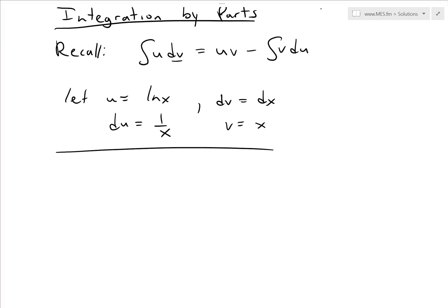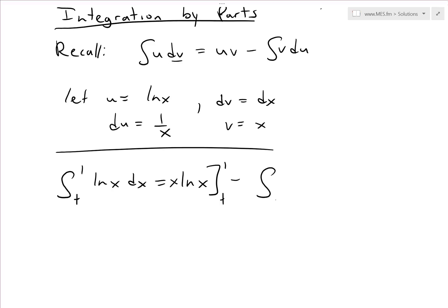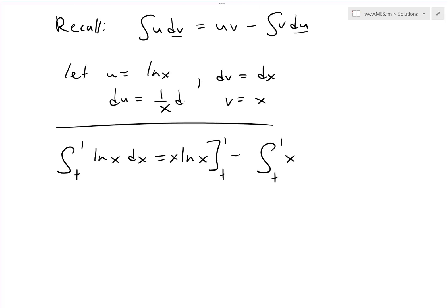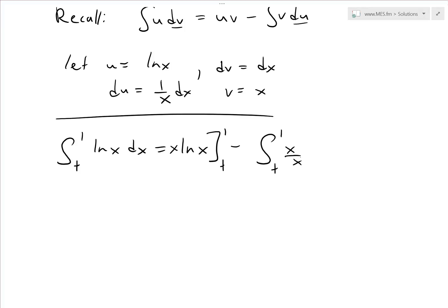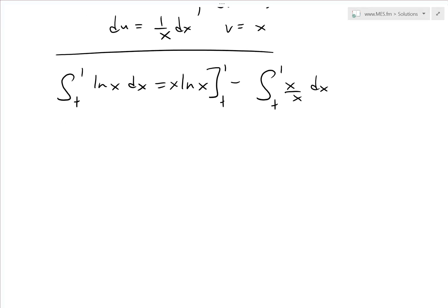Putting this together, the integral from t to 1 of ln(x) dx equals [x · ln(x)] evaluated from t to 1, minus the integral from t to 1 of x · (1/x) dx. The x's in that last integral cancel, leaving just dx.